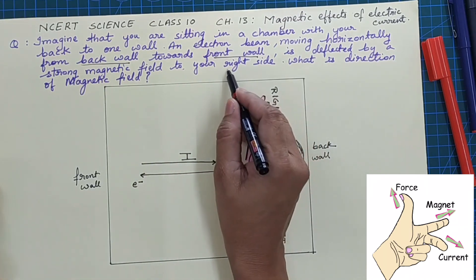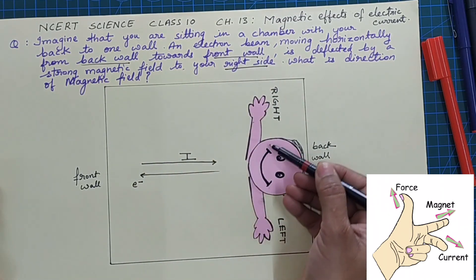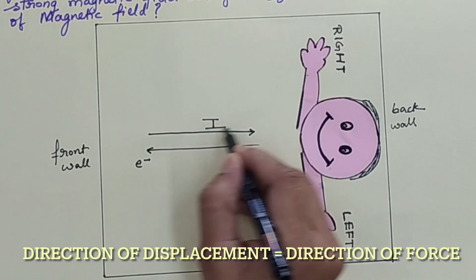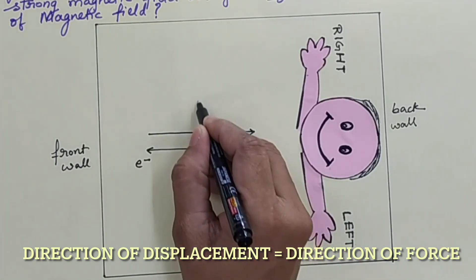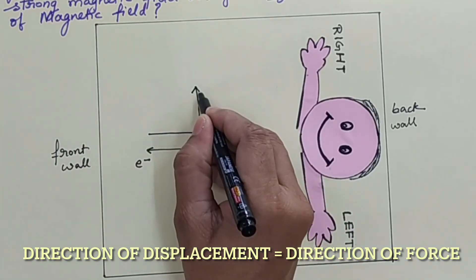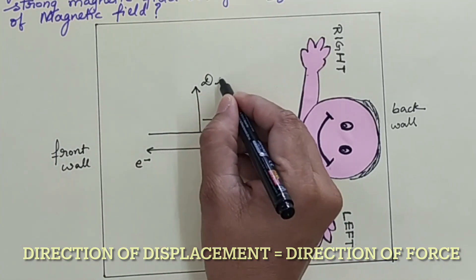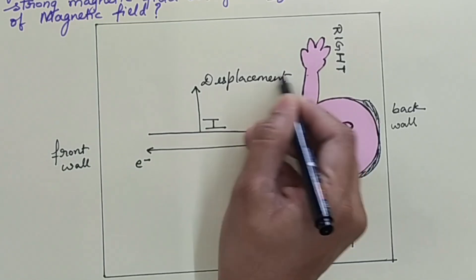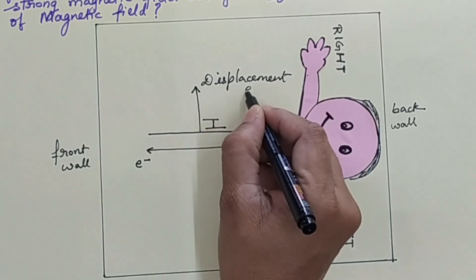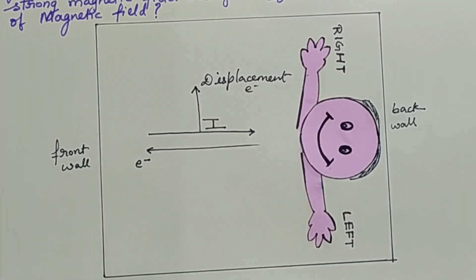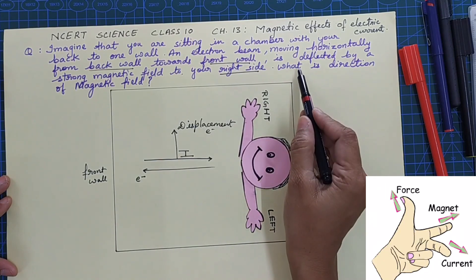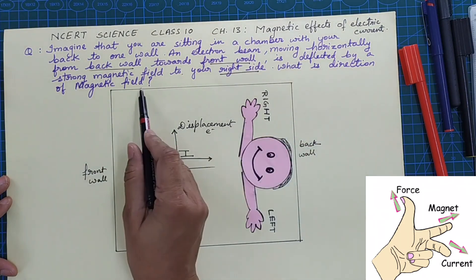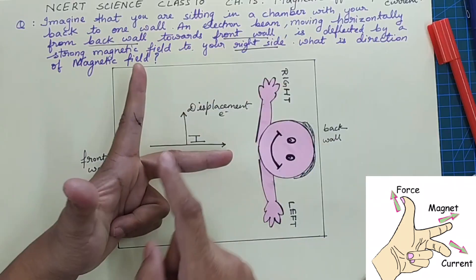The electron beam is deflected by a strong magnetic field to the right side. So the electron beam is deflected towards the right side, and this is the direction of displacement of the electron. With this information, we have to determine the direction of the magnetic field.